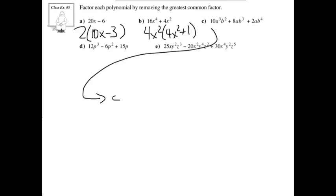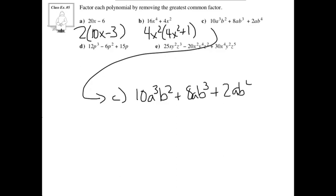Let's take a look at c. We've got 10a to the power of 3 b squared, plus 8ab to the power of 3, plus 2ab to the power of 4. Taking a look at the coefficients — we've got 10, 8, and 2 — the greatest common factor of these would be 2.